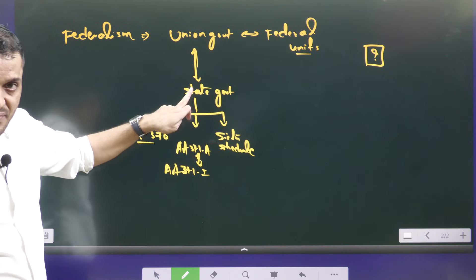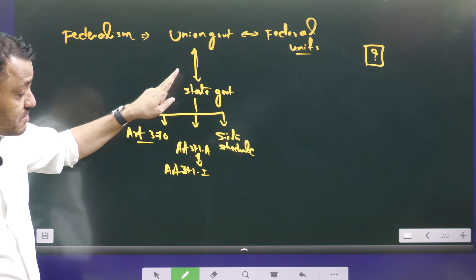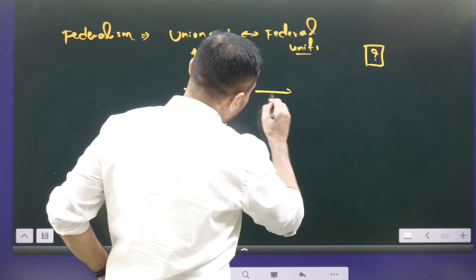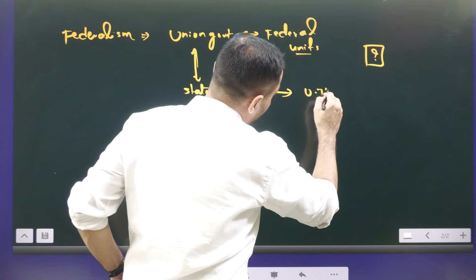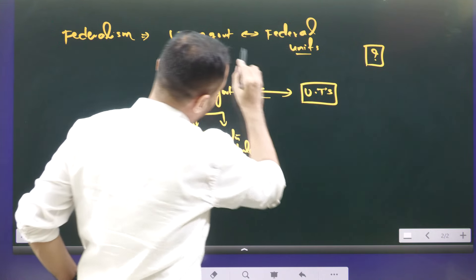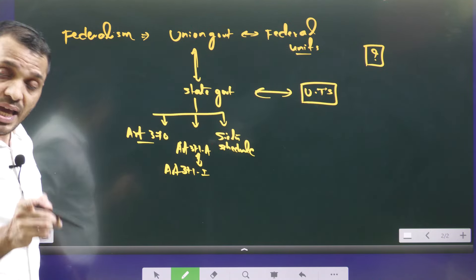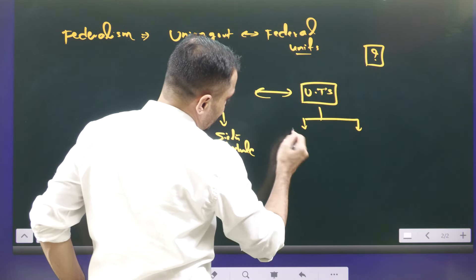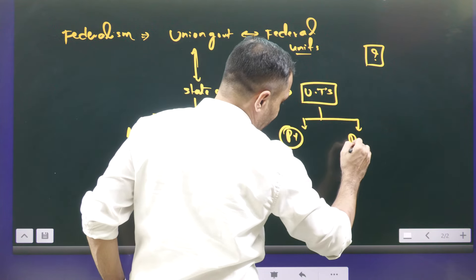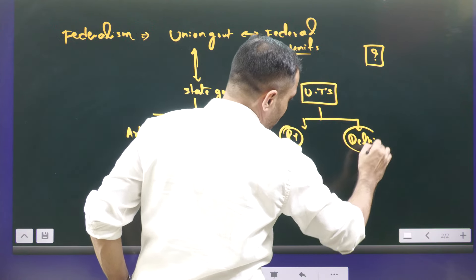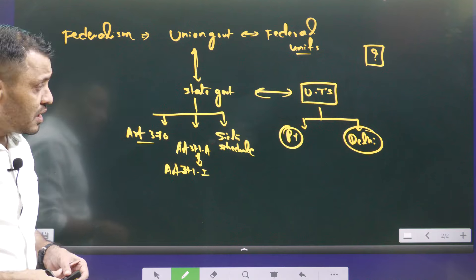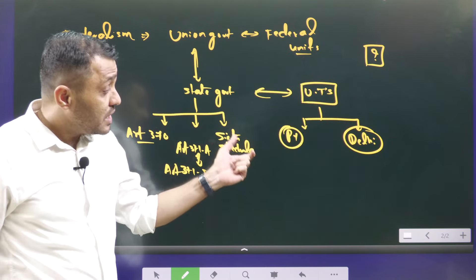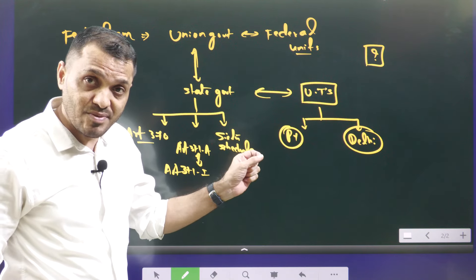This is the vertical asymmetric federalism — there is asymmetry between the union as well as the states. Not only that, there is also vertical asymmetric federalism between the union and the UTs. Among the UTs with assemblies such as Puducherry and Delhi, the assembly of Puducherry can make laws on the state list as well as the concurrent list.